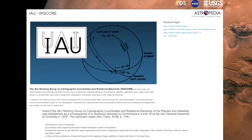This is a problem that has to be addressed for every single body that we discover. There's a group within the IAU whose specialty is deciding what the coordinate system should be and where the meridian should be placed. Sometimes it's very easy to pick the meridian and pick the poles.